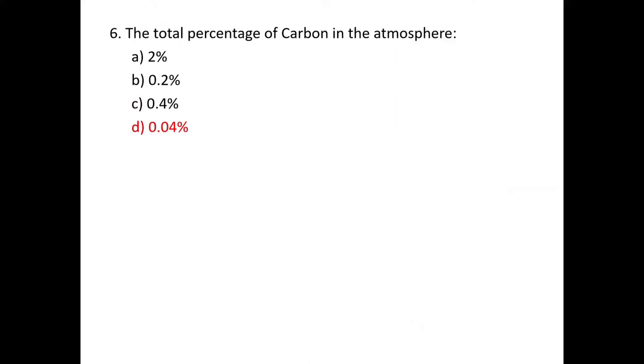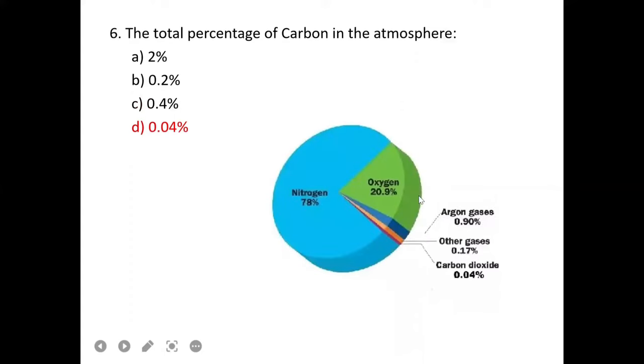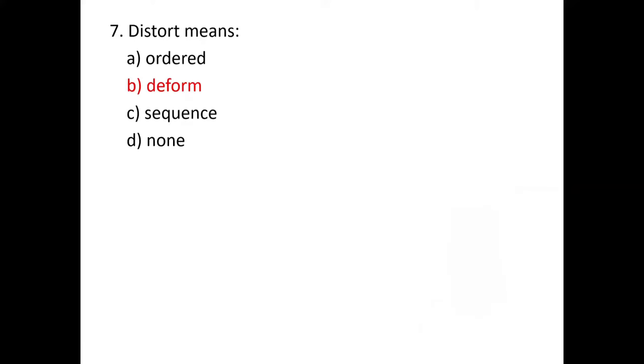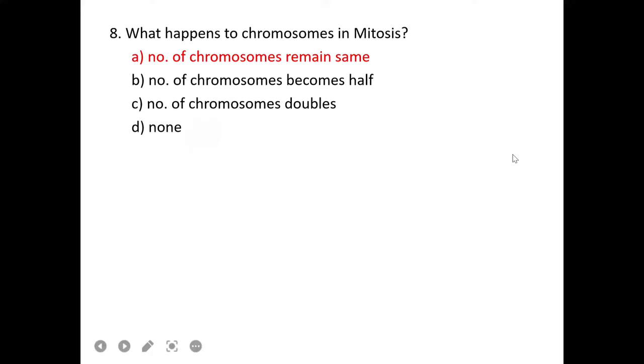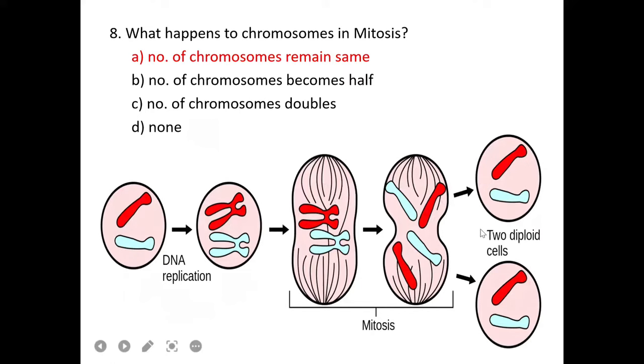Number six: the total percentage of carbon in atmosphere is 0.04%. Nitrogen is 78%, oxygen 20.9%, argon gases 0.9%, and other gases are 0.17%. Question seven: distort means disordered or deformed, B is correct. Question eight: what happens to chromosomes in mitosis? Mitosis conserves chromosome number, that's why it's called equational division. The number of chromosomes remains the same.